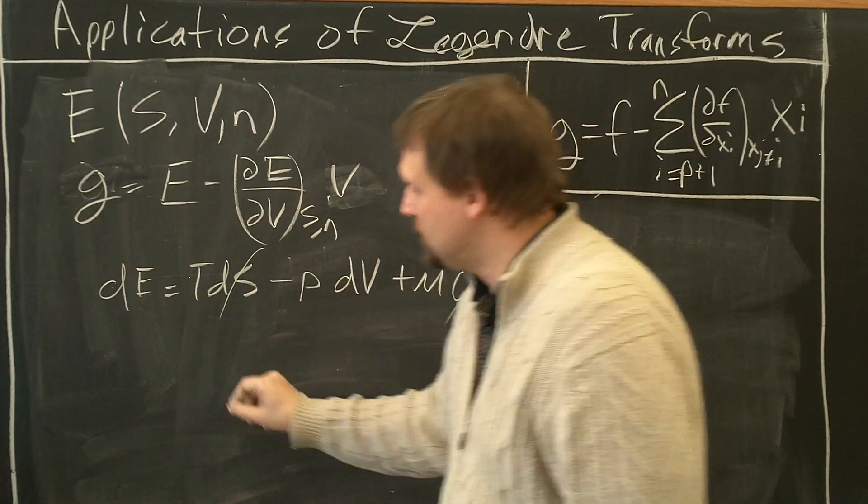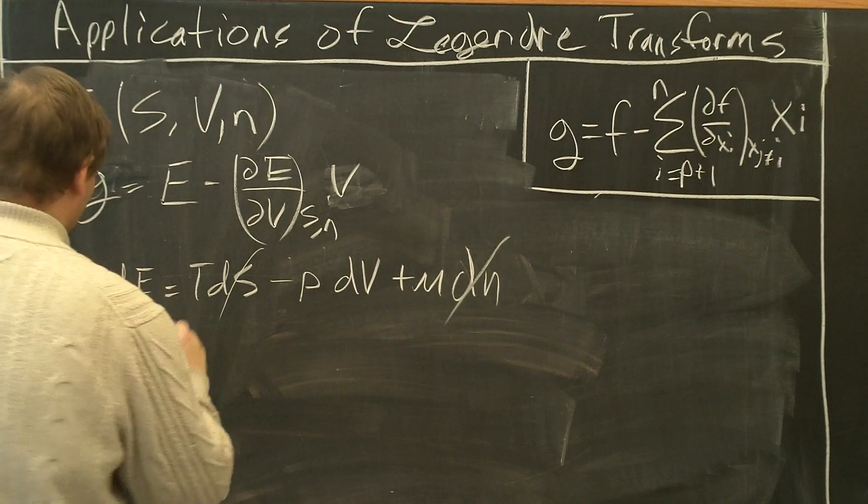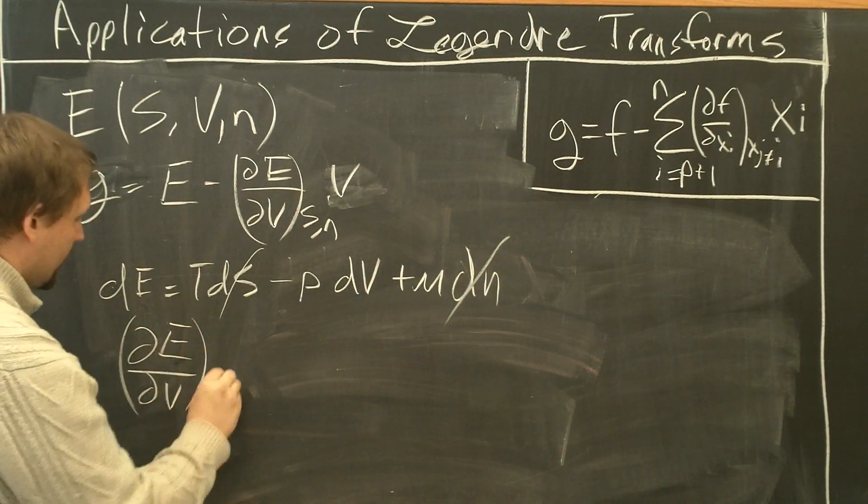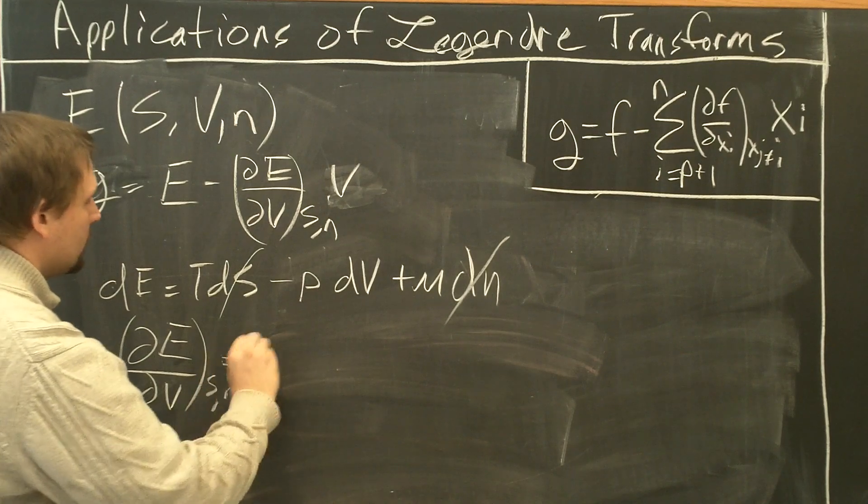dE/dV equals minus P. Partial E with respect to V at S fixed, N fixed equals minus P.